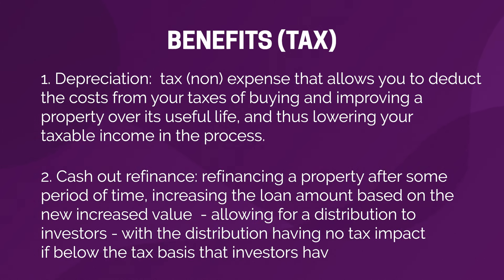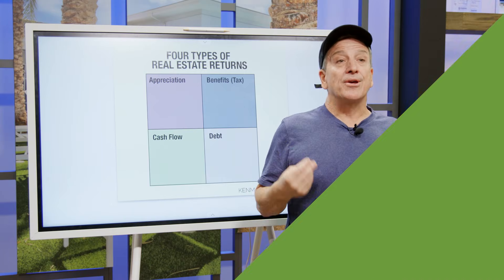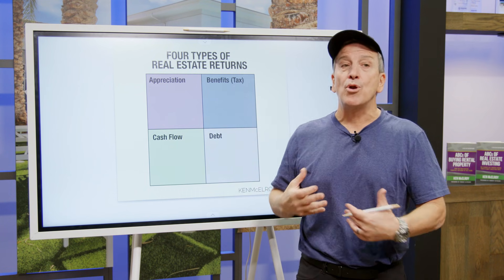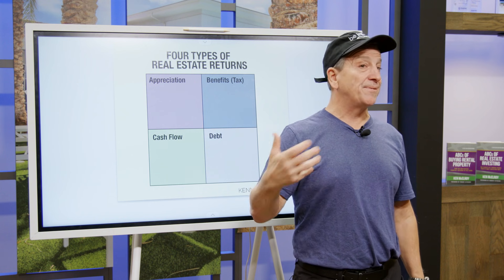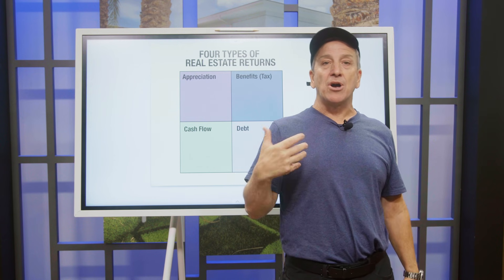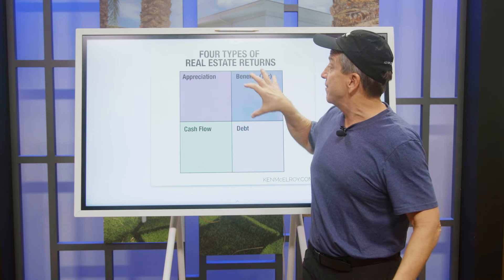Another benefit is a cash-out refinance, which we're going to talk about in the debt section. That's essentially using debt to buy something and then using more debt to pay off that debt — which typically happens when you do some kind of forced appreciation. There are also other things like a 1031 exchange and cost segregations. These are massive benefits, and as you start to deal with more sophisticated investors, this is where they're mostly going to sit. Just this morning I was having conversations with multiple people and all of them were focused around tax, because as you start to sell stuff, this is where they are.